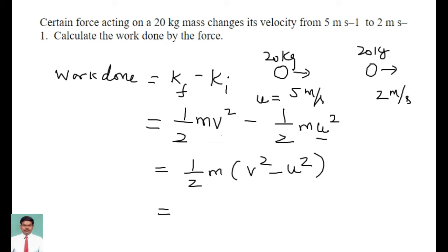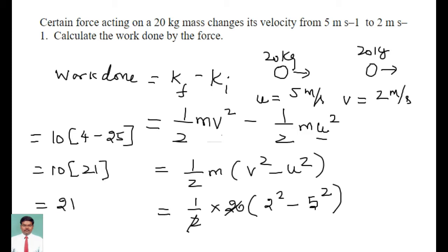The initial velocity is 5 meter per second and 2 meter per second is the final velocity. If I substitute here, half into the mass of the object that is 20 into v square, that is 2 square minus u square equal to 5 square. So that is equal to, if I cancel this, it's going to be 10 into 4 minus 25, that is 10 into negative 21, that's going to be minus 210 joules.